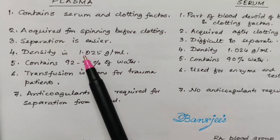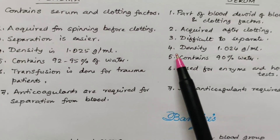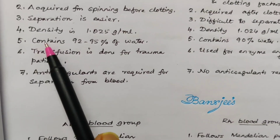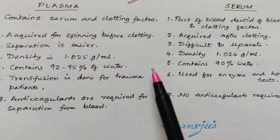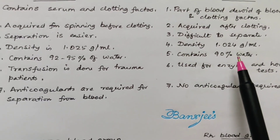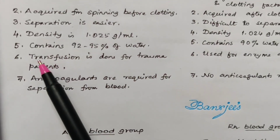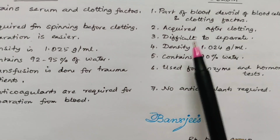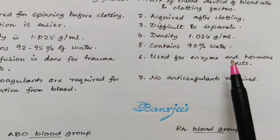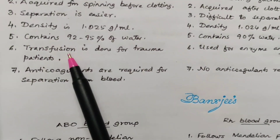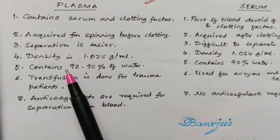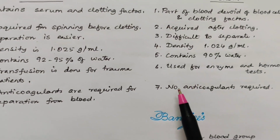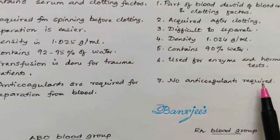The density of plasma is about 1.025 g/mL and that of serum is 1.024 g/mL. Plasma contains 92 to 95 percent water, whereas serum contains 90 percent water. Plasma transfusion is done for trauma patients, whereas serum is used for enzyme and hormone tests. Plasma requires anticoagulants for separation from blood; serum requires no anticoagulants.